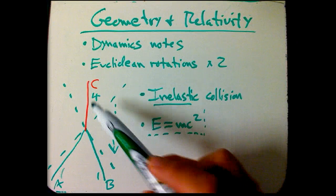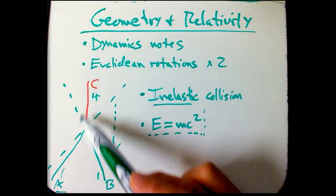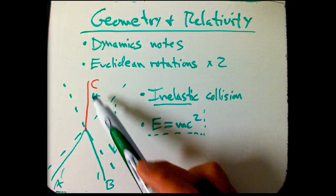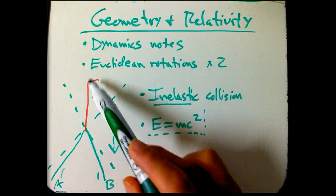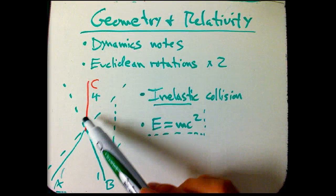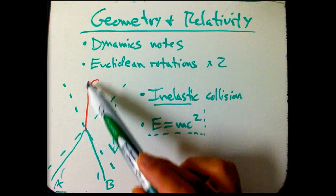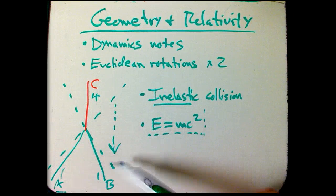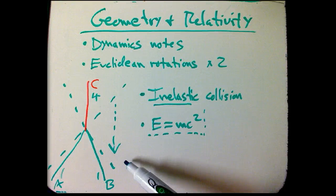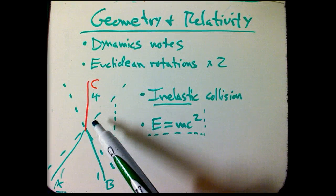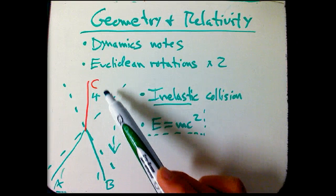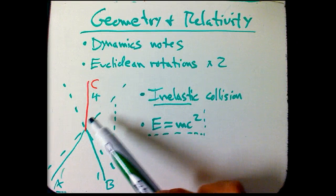Because before E equals MC squared, before this understanding, we knew that there could be some object like, you know, a piece of coal, for example, or some, or like nitroglycerin mixed with an oxidizer or something like that, that had a lot of energy stored in it and it's liable to explode and that energy can then become available as kinetic energy. And we didn't have any real upper bound in the 19th century on how much energy could come out of a process like that.